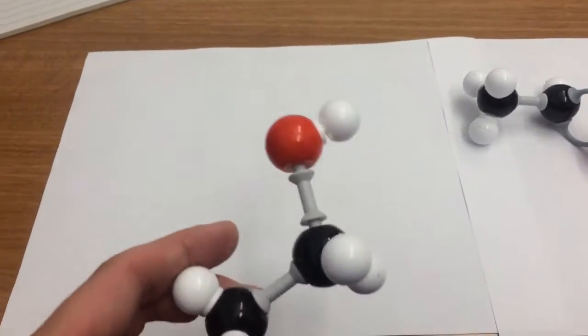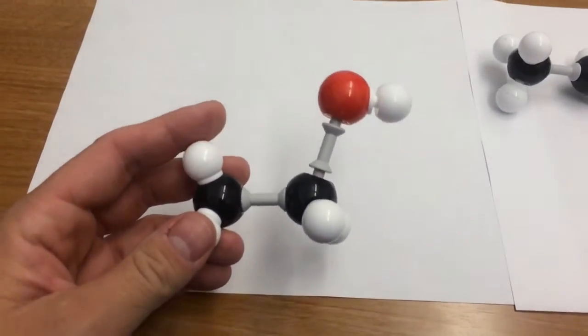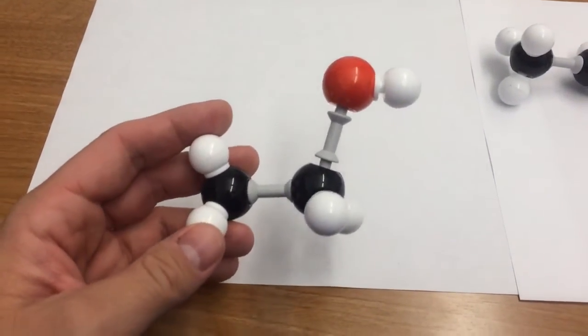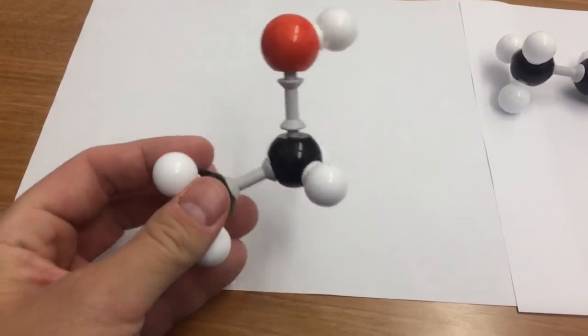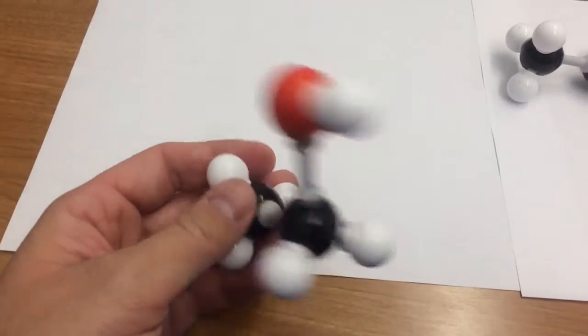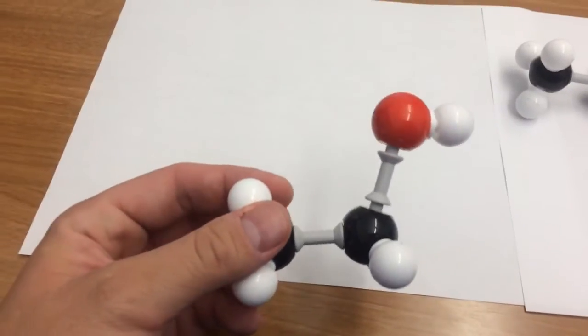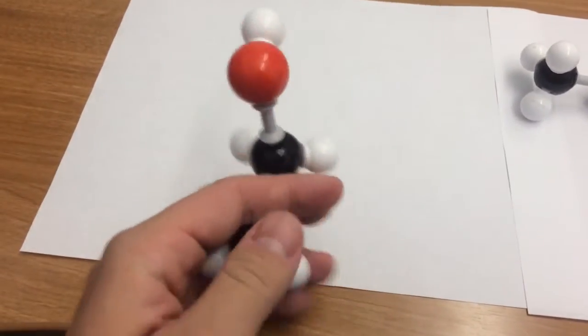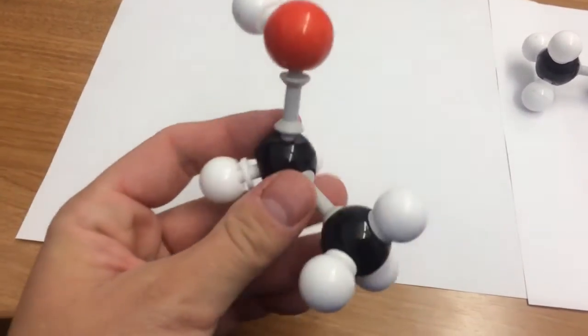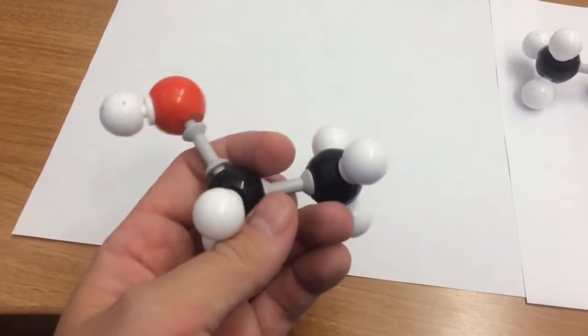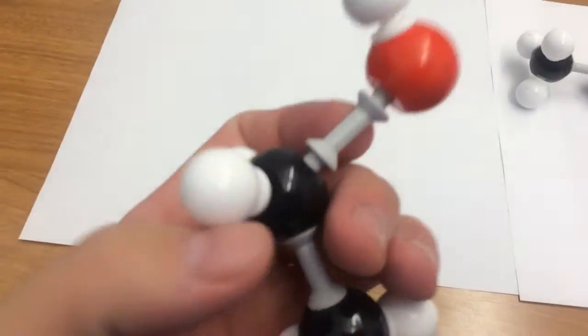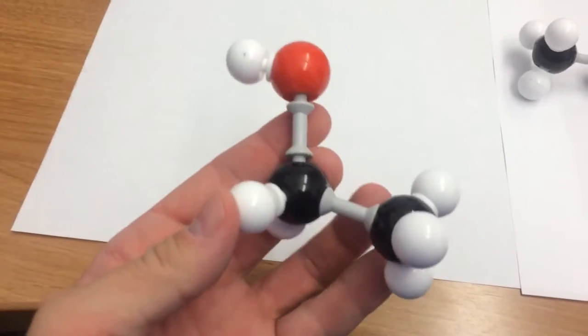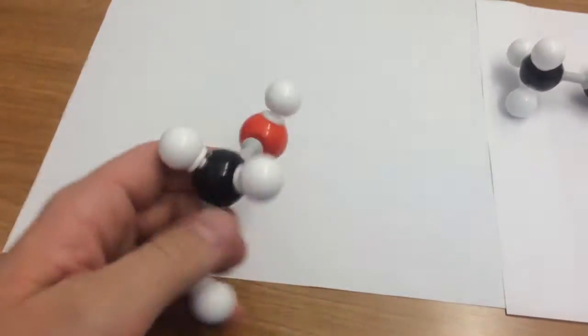Ethanol, however, it saturates enzymes at very low concentrations, right around 20 milligrams per deciliter concentrations. 80 milligrams per deciliter is considered legally intoxicated in most places in the United States. So, far below the legal intoxication limit, we have saturation kinetics occurring in the body.